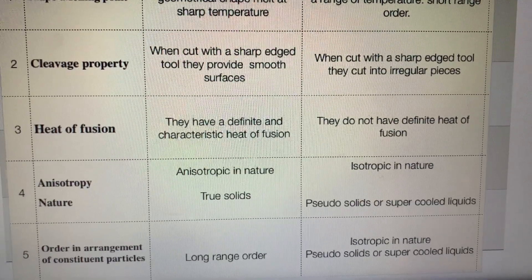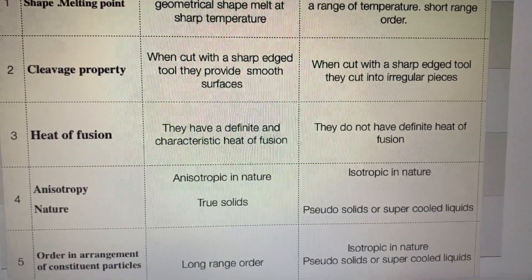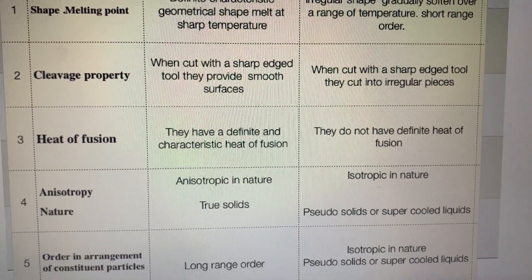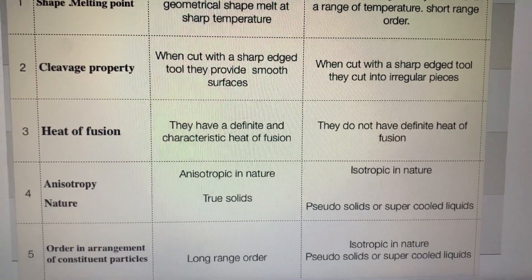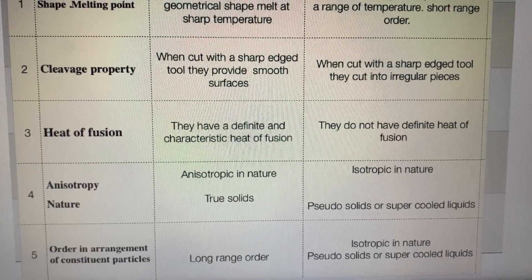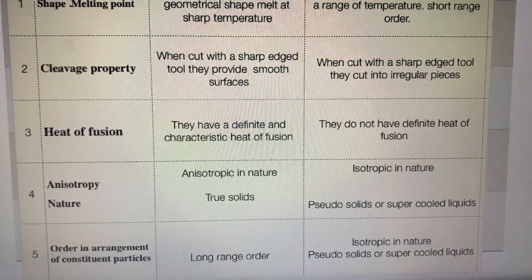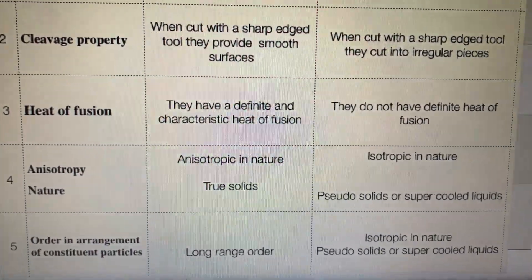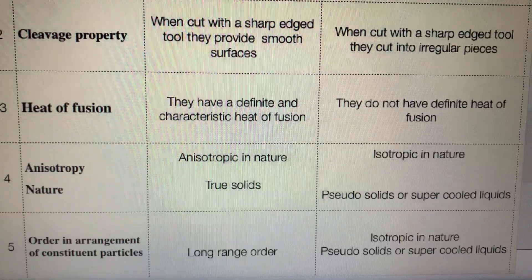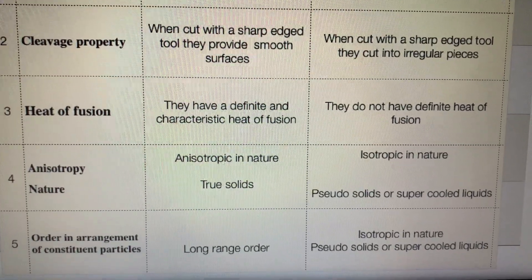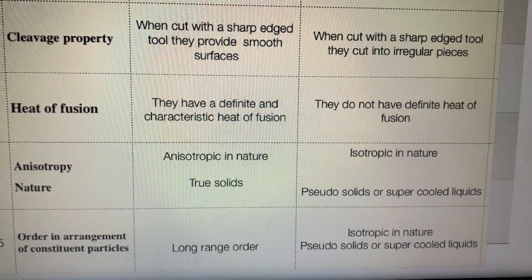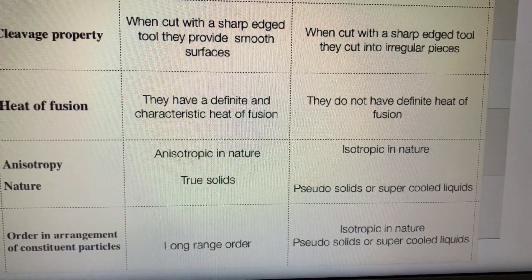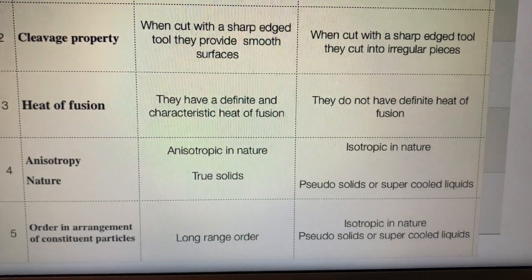One more thing to focus on is nature. In crystalline, it is a true solid — a solid solid. And amorphous is a pseudo-solid, also called a super-cooled liquid, because it is powder or glass. That is why we call it pseudo-solid. In terms of arrangement of constituent particles, crystalline shows long-range order, while amorphous shows short-range order.